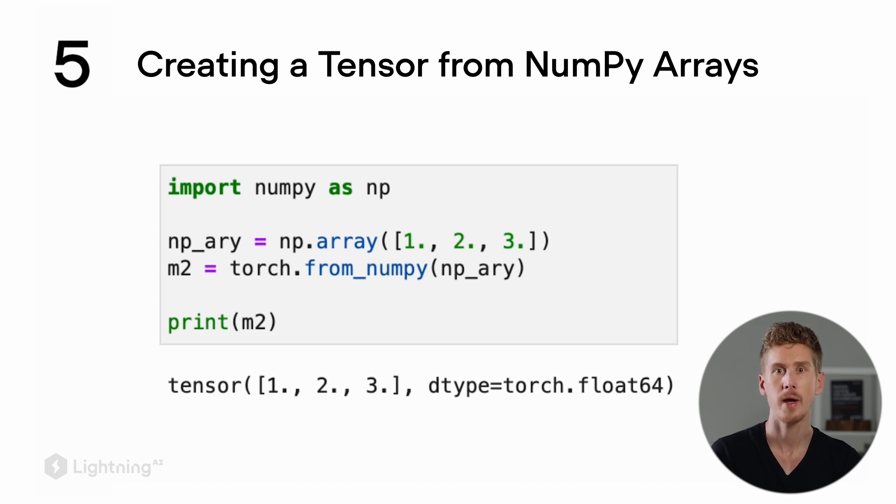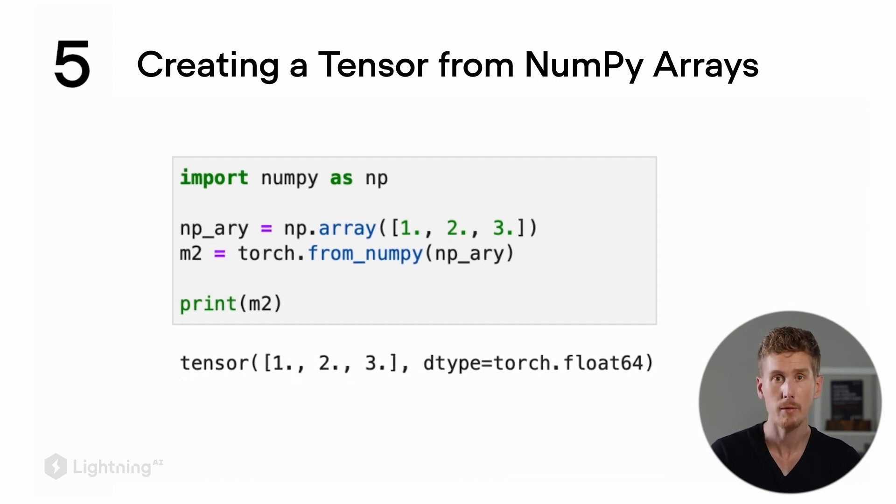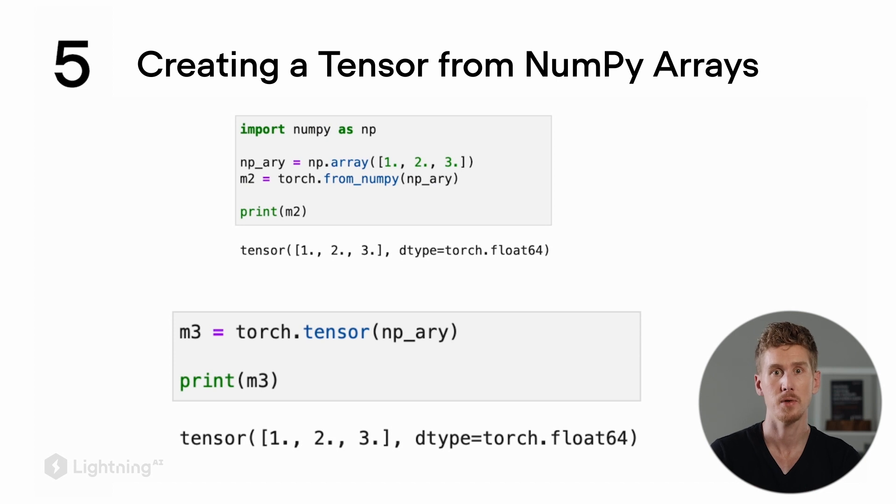However, since NumPy uses 64-bit precision by default, the returned .dtype of this tensor will be float64. The 64-bit precision has nothing to do with using the from_numpy function—if we used torch.tensor, we would also get float64 precision. The reason it's 64-bit precision is because that's the default type in NumPy.